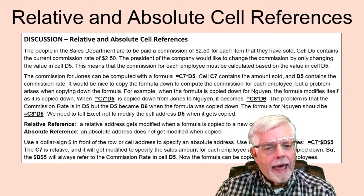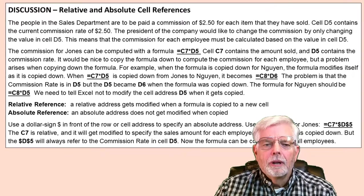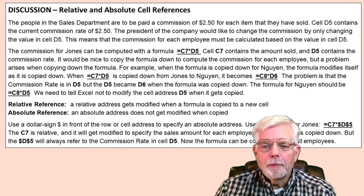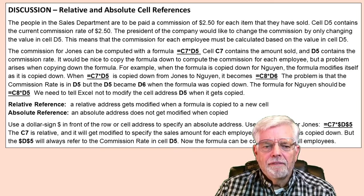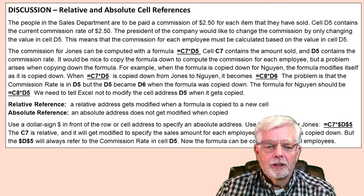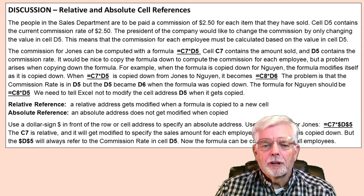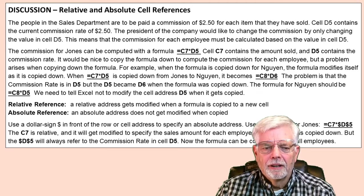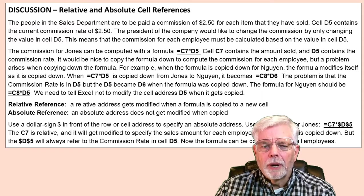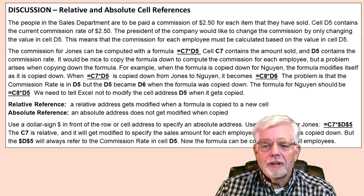Discussion: Relative and Absolute Cell References. The people in the sales department are to be paid a commission of $2.50 for each item that they have sold. Cell F5 contains the current commission rate of $2.50. The president of the company would like to change the commission by only changing the value in cell F5. This means that the commission for each employee must be calculated based on the value in cell F5. Cell C7 contains the amount sold and F5 contains the commission rate. The commission for Jones in F7 can be computed with the formula equal C7 times F5.